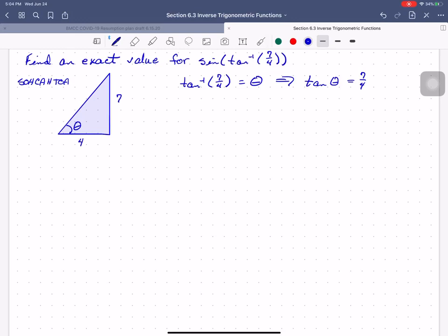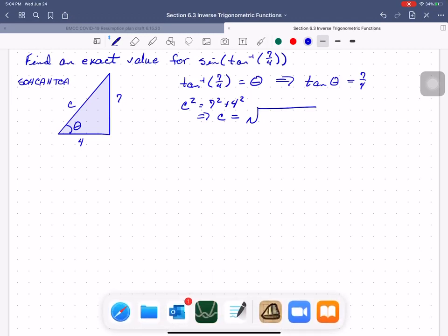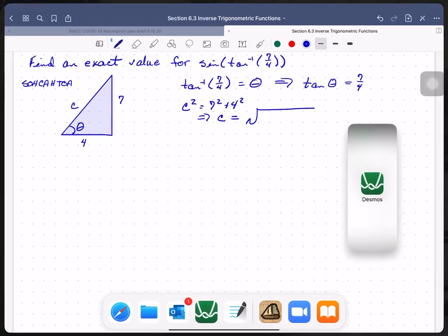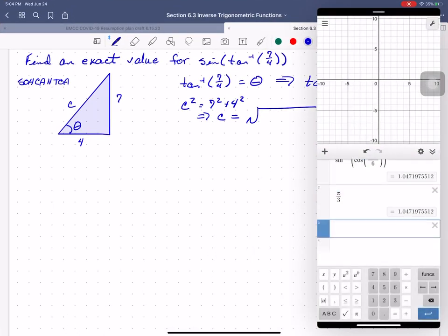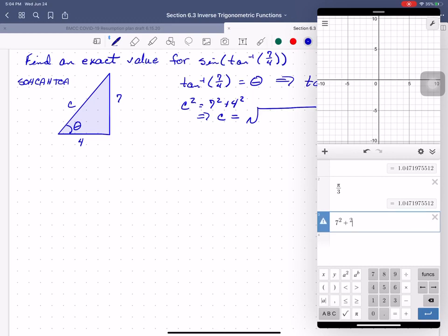Now I can find my hypotenuse because I know that if we call this guy C, C squared equals 7 squared plus 4 squared. So that means that C equals the square root of 49 plus 16. My brain is a little fried. Let's figure out what 49 plus 16 is. Actually, let's make life simpler. Let's figure out what 7 squared plus 4 squared is. 65.